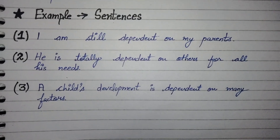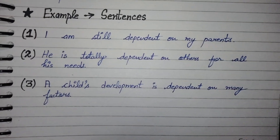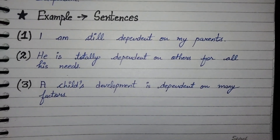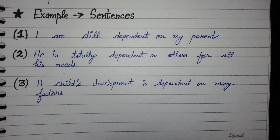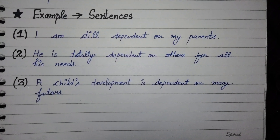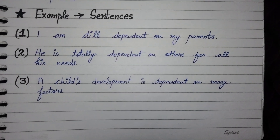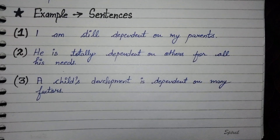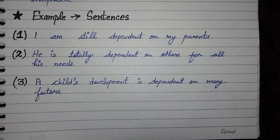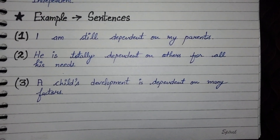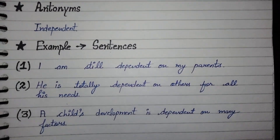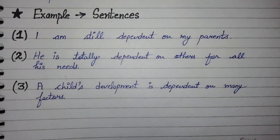Now, example sentences. First: I am still dependent on my parents. Second: He is totally dependent on others for all his needs. And third: A child's development is dependent on many factors. These are all example sentences to understand this word in a much better and easy way.